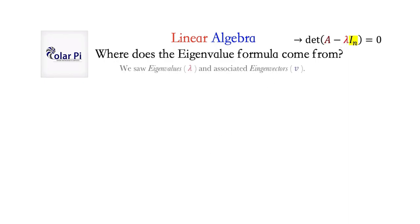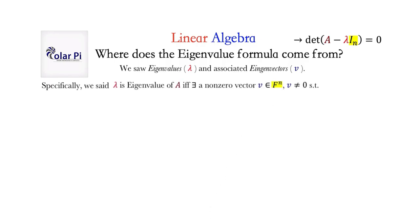But the question is where does this come from and why does it make sense? Well, it makes sense because of this. As I said in the previous video, we saw what eigenvalues lambdas are and their associated eigenvectors Vs. So if we have a lambda 1 that's an eigenvalue, it has an associated eigenvector V1. The definition of eigenvalues and eigenvectors says the following: lambda is an eigenvalue for the matrix A — A being an n by n matrix — if and only if there exists a non-zero vector V such that A times V equals lambda times V.